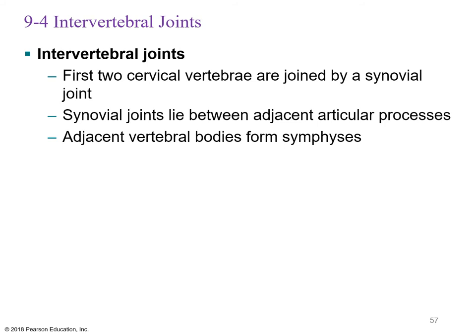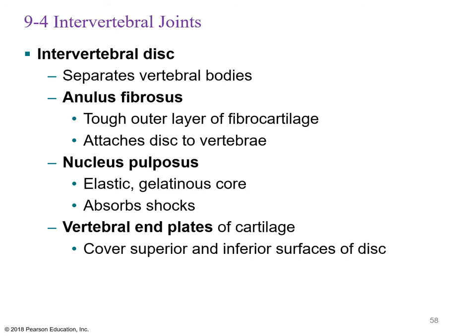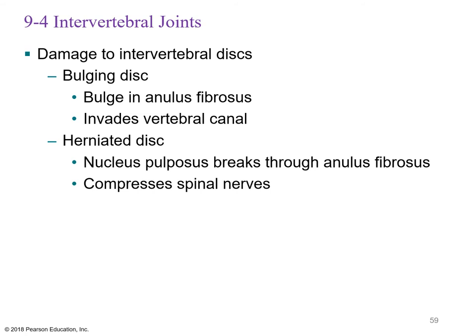The intervertebral joints are notable because the first two cervical vertebrae — atlas and axis — are atypical. The atlas and axis are joined by a synovial joint between the dens and the atlas. All other vertebrae have synovial joints at the superior and inferior articulating facets, with hyaline cartilage, synovial membrane, and synovial fluid. Between vertebral bodies are intervertebral discs with a tough outer annulus fibrosus of fibrocartilage, a gelatinous nucleus pulposus core for shock absorption, and cartilaginous vertebral end plates.